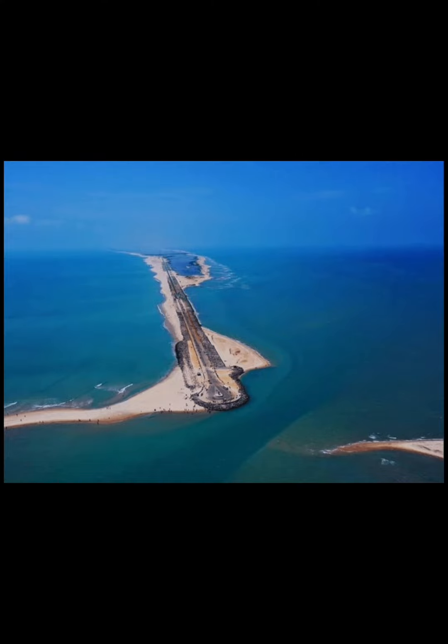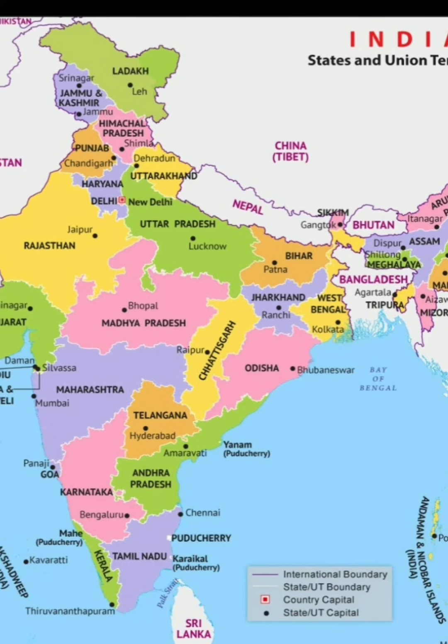Sri Lanka is just 18 miles away from the Dhanuskodi village in Kanyakumari. If we see the Indian map, we can also see some other countries like Nepal, Pakistan, Bangladesh, and Bhutan, and many others, for the same reason.